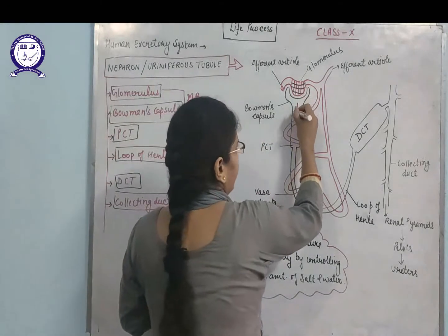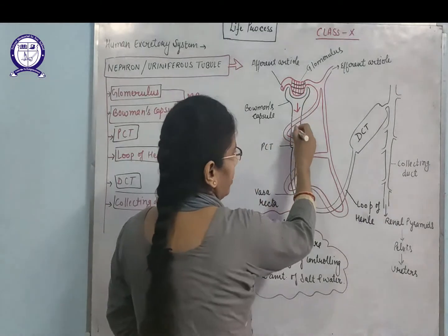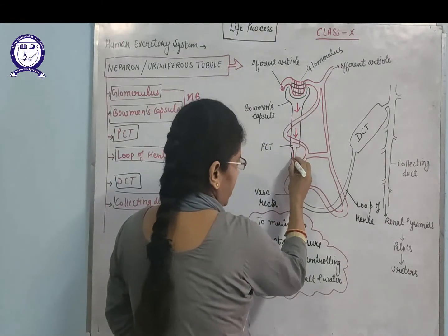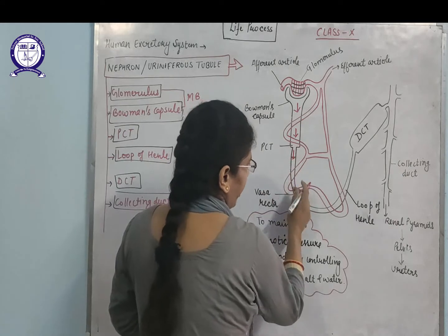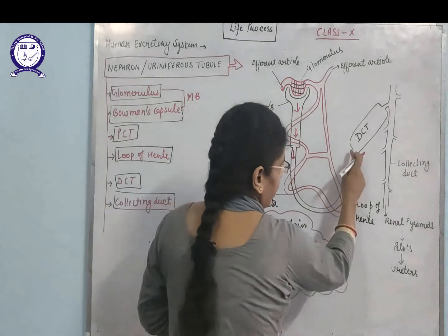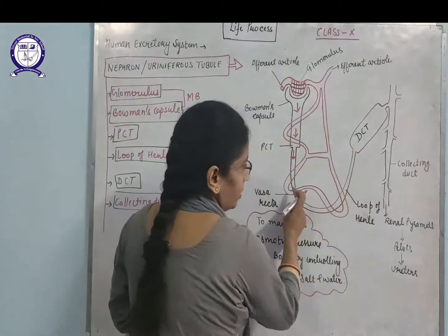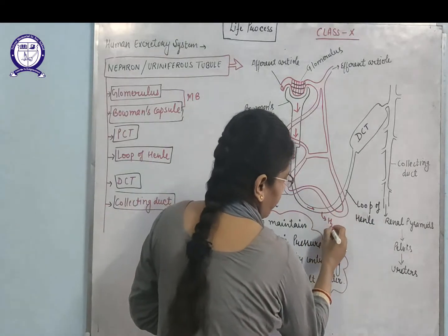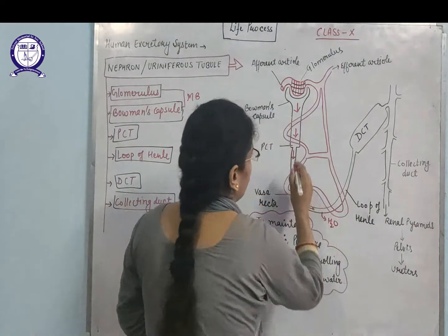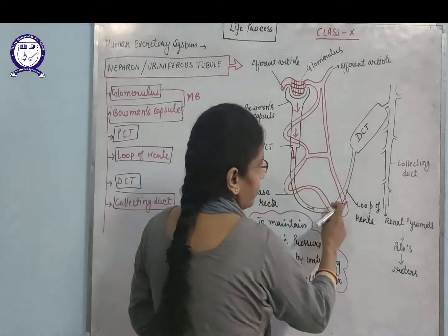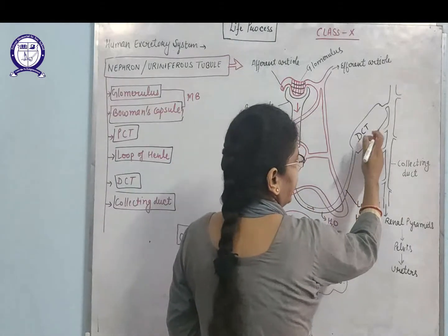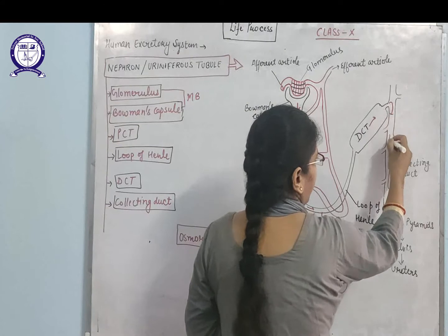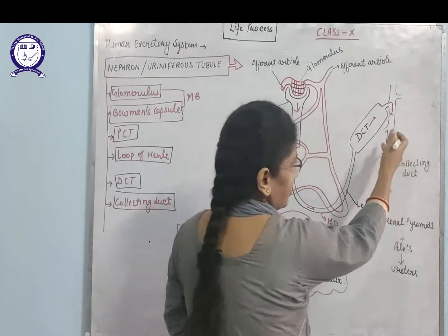Waste passes from the Bowman's capsule into the PCT, then into the loop of Henle — shown by the black line — where the body absorbs water. After that, the waste passes into the DCT, and from the DCT it passes into the collecting ducts.